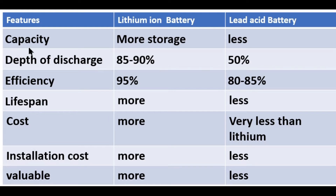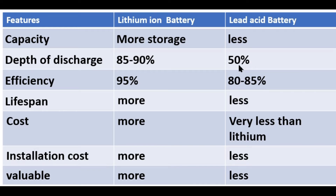The first point is capacity. Lithium-ion has more storage capacity. A lithium-ion battery can be discharged up to 85 to 90 percent, meaning 85 to 90 percent of the power can be taken from the battery to drive the load. But in a lead-acid battery, only 50 percent of the power can be taken.